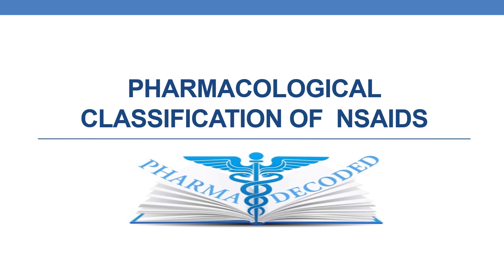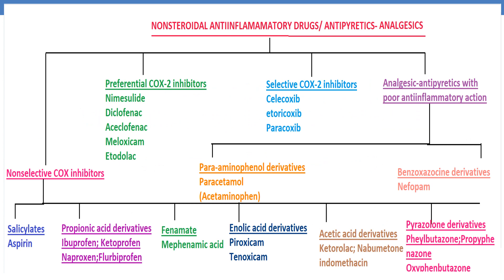Hello everyone. Let us discuss the pharmacological classification of NSAIDs, which are non-steroidal anti-inflammatory drugs. NSAIDs are categorized into four groups: non-selective COX inhibitors, where COX stands for cyclooxygenase enzyme; preferential COX-2 inhibitors; selective COX-2 inhibitors; and analgesic antipyretics with poor anti-inflammatory action.